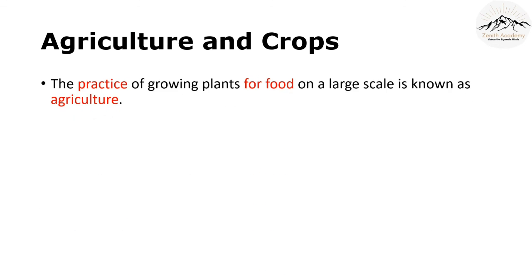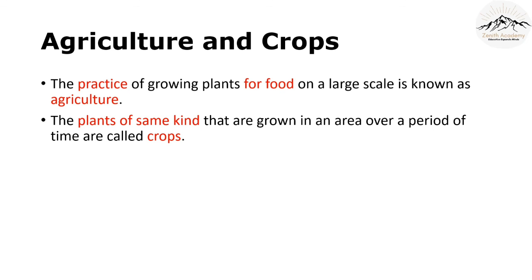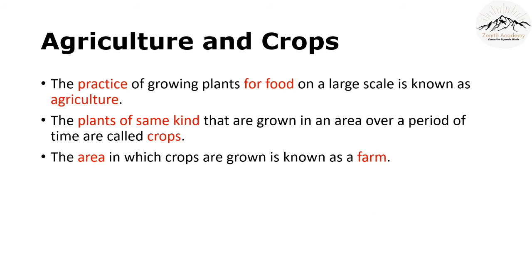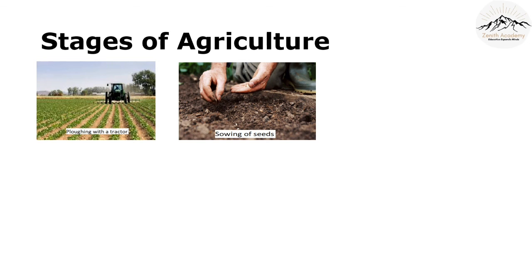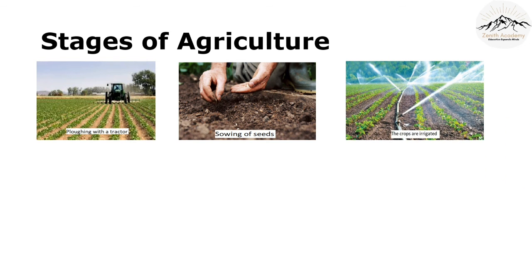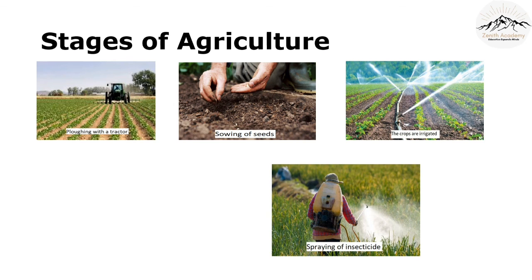The practice of growing plants for food on a large scale is known as agriculture. The plants of the same kind grown in an area over a period of time are called crops, and the area in which crops are grown is known as a farm. The stages of agriculture are: plowing is done with the help of a tractor, then seeds are sown, the crops are supplied with water through irrigation, they are sprayed with insecticides and pesticides to kill insects or pests, and finally the crops are harvested.